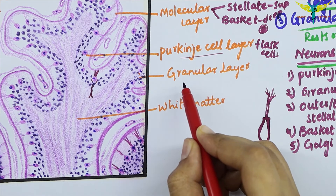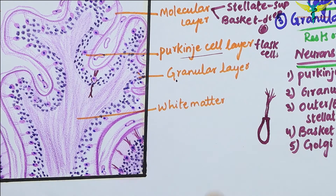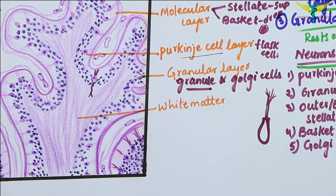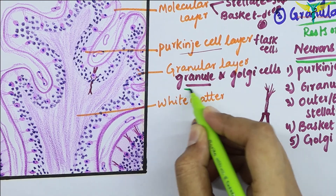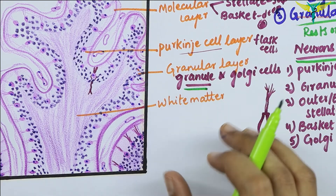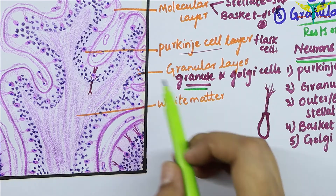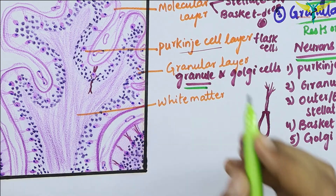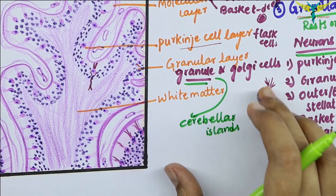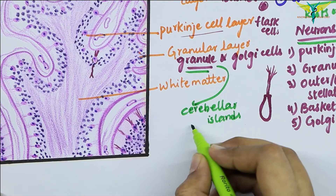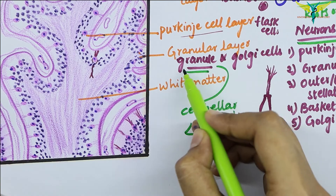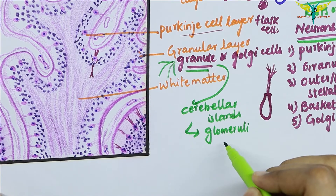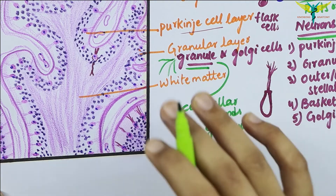The granular layer is the innermost layer and consists of numerous granule cells and few Golgi cells. The granules stain very deeply with hematoxylin stain. The granule cells are very small, numerous, spherical neurons that occupy the greater part of the granular layer. The remaining spaces not occupied by these cells are called cerebellar islands, and these islands are occupied by special synaptic structures called glomeruli. The granule cells give off three to five short dendrites which end by entering the glomeruli, and the granule cells receive impulses from the afferent fibers.